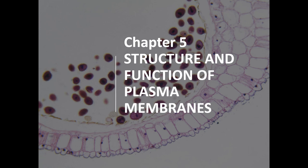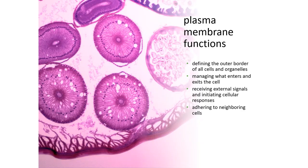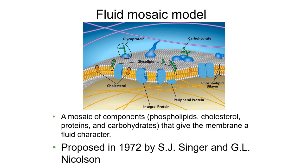Chapter 5 is about the structure and function of the plasma membrane. We've talked a little bit about plasma membranes and how they're made up, and that they exist in all cells whether prokaryotic or eukaryotic. Now we'll go further in depth, starting with their functions. The plasma membrane defines the outer border of all cells and organelles. Some cells like prokaryotic and plant cells also have a cell wall, but cell membranes are in all cells. They manage what enters and exits the cell, receive external signals, initiate cellular responses, and adhere to neighboring cells. This is often referred to as the fluid mosaic model.